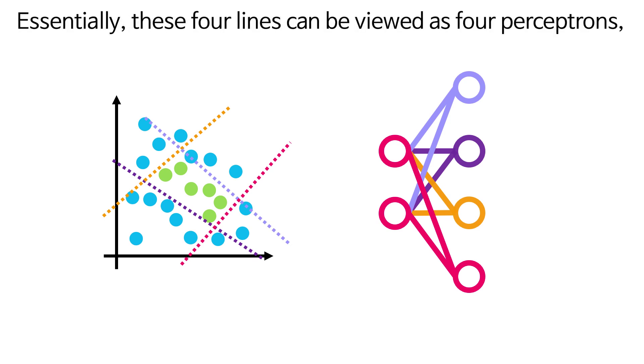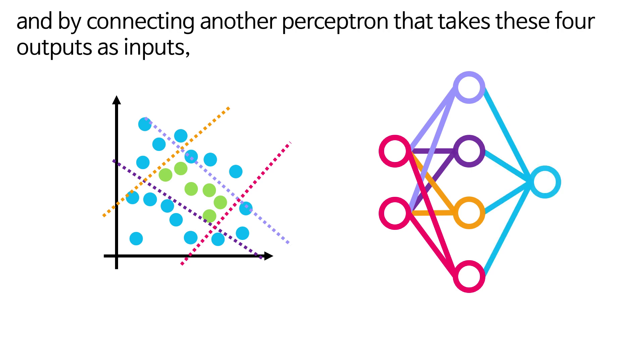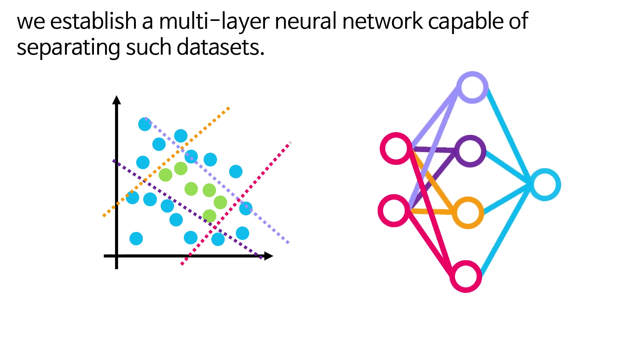Essentially, these four lines can be viewed as four perceptrons, and by connecting another perceptron that takes these four outputs as inputs, we establish a multilayer neural network capable of separating such datasets.